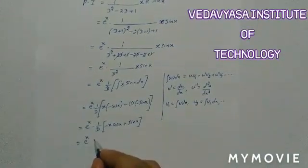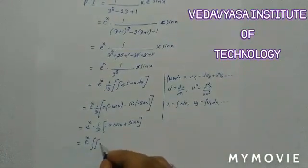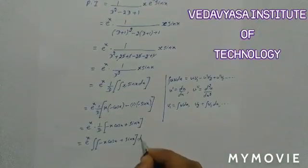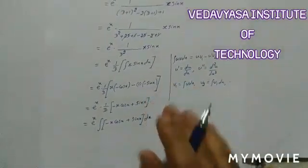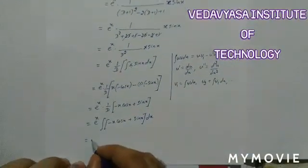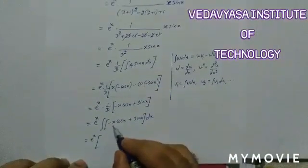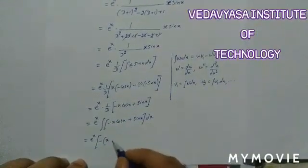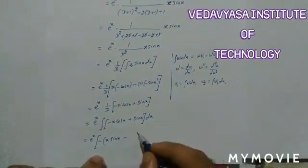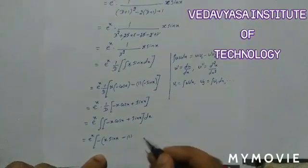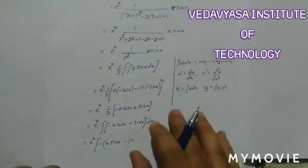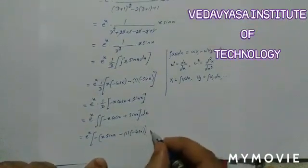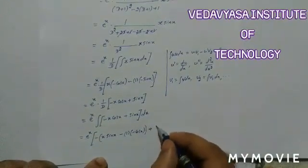Now applying the remaining 1/D (integrating once more): eˣ · ∫(-x·cos x + sin x) dx. Applying Bernoulli again for ∫x·cos x dx with u = x, v = cos x: sin x - 1·(sin x integrated) = x·sin x + cos x. And ∫sin x dx = -cos x. Combining: -[x·sin x + cos x] + (-cos x).